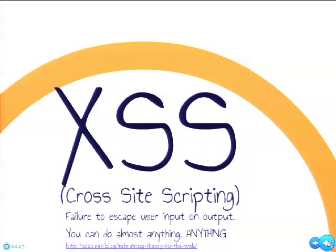There was a module that logged user agent strings so you could see how many people used an iPhone or Safari on a Mac. Someone discovered the module was not escaping that data — not treating it as unsafe user input. Using command-line tools, you could write a different kind of header that's actually JavaScript. When you went to view your log messages, that JavaScript would execute as a cross-site scripting attack. Anything coming from the browser, whatever it is, is user input and cannot be trusted.